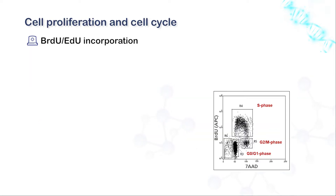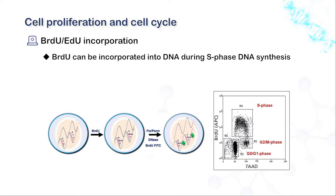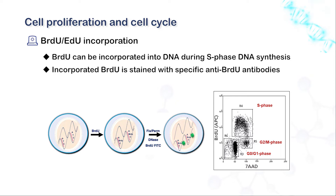For cell proliferation and cell cycle: BrdU and EdU can be incorporated into replicating DNA during the S phase. Staining with the anti-BrdU antibody, the S phase can be identified to show proliferating cells. Coupled with a dye that binds to total DNA, the fluorescence intensity varies with the DNA content, and the cell cycle can be determined. This also allows detection of the proliferative characteristics of cells throughout the cell cycle.